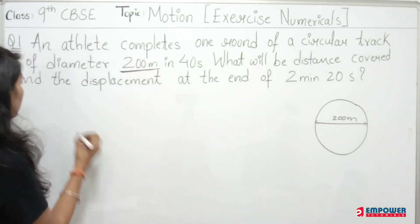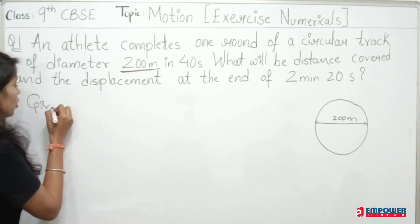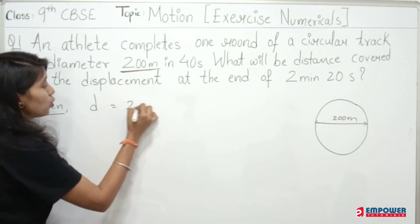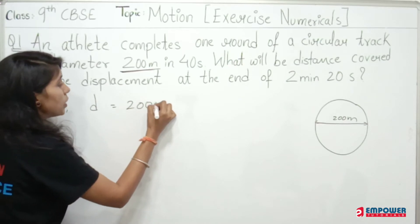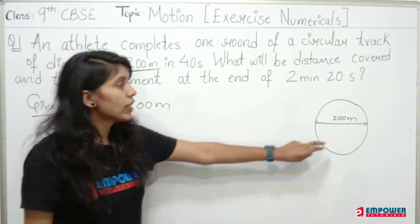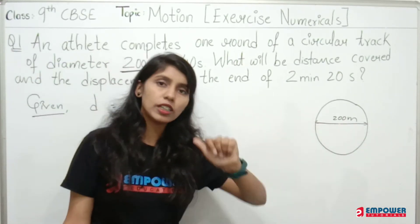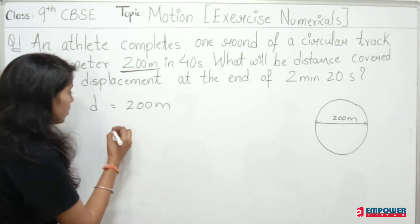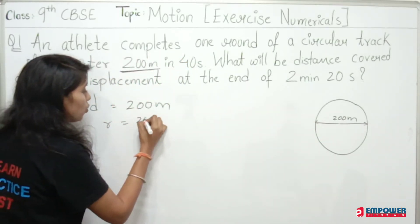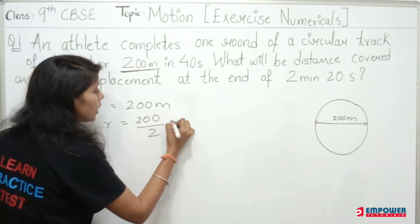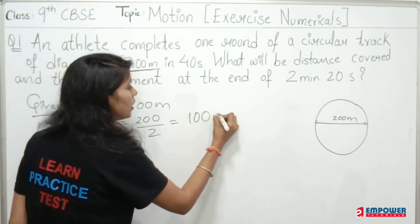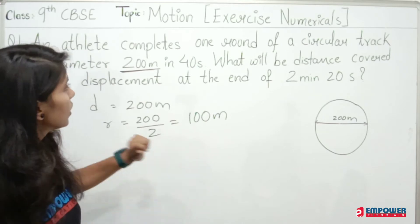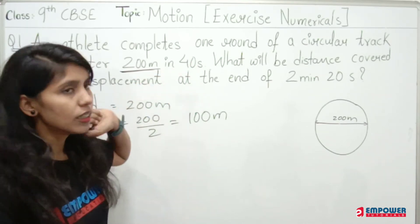So what do we do? Let's write what is given. The first given is diameter is 200 meters. So if diameter is 200 meters, then radius will be diameter divided by 2. That means radius equals 200 divided by 2, which is 100 meters. The athlete completes one round in 40 seconds.